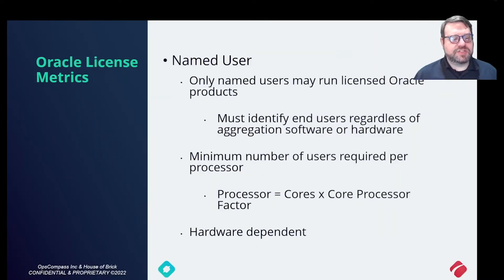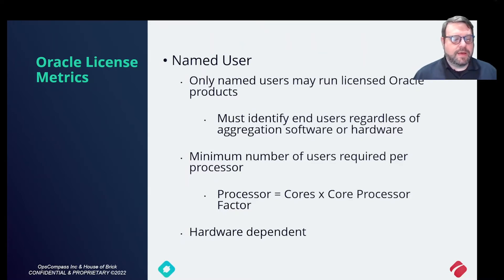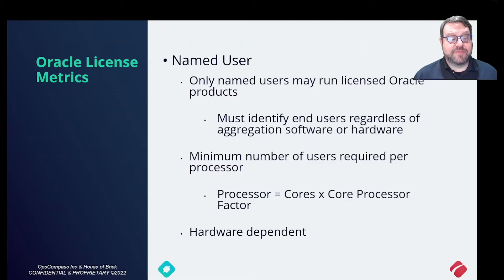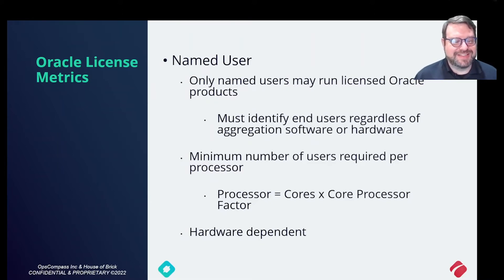Let's talk briefly about some terms you need to know when using Oracle licenses. Named User and Processor are two common metrics. A key point is that all Oracle licenses, at the end of the day, can in some fashion be traced back to physical processors — with the exception of Unlimited License Amendments, which we'll touch on shortly.